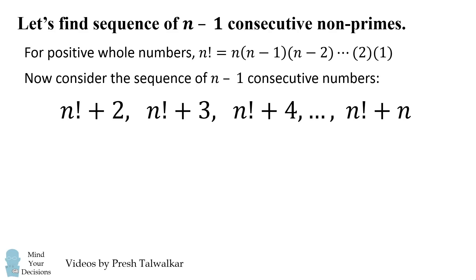The list starts with n factorial plus 2. The next number is n factorial plus 3. The next number is n factorial plus 4. And this goes all the way to n factorial plus n.